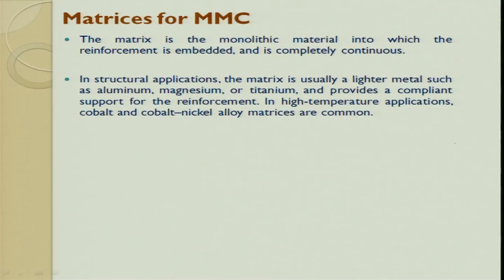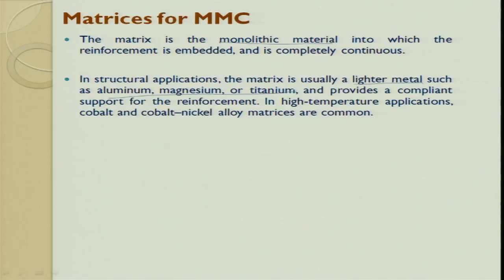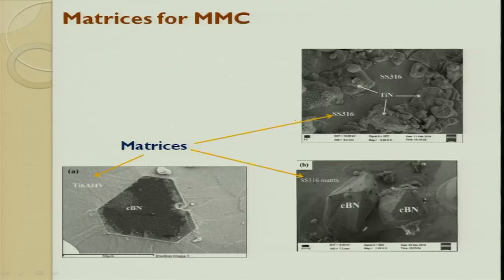What are the properties of the matrix? The matrix is a monolithic material into which the reinforcement is embedded and it is completely continuous — meaning the reinforcement is dispersed within it. In structural applications, the matrix is usually a light metal such as aluminum, magnesium, or titanium, where there is load bearing and it provides compliant support for the reinforcement. In high temperature applications, cobalt and cobalt-nickel alloys are very commonly used.